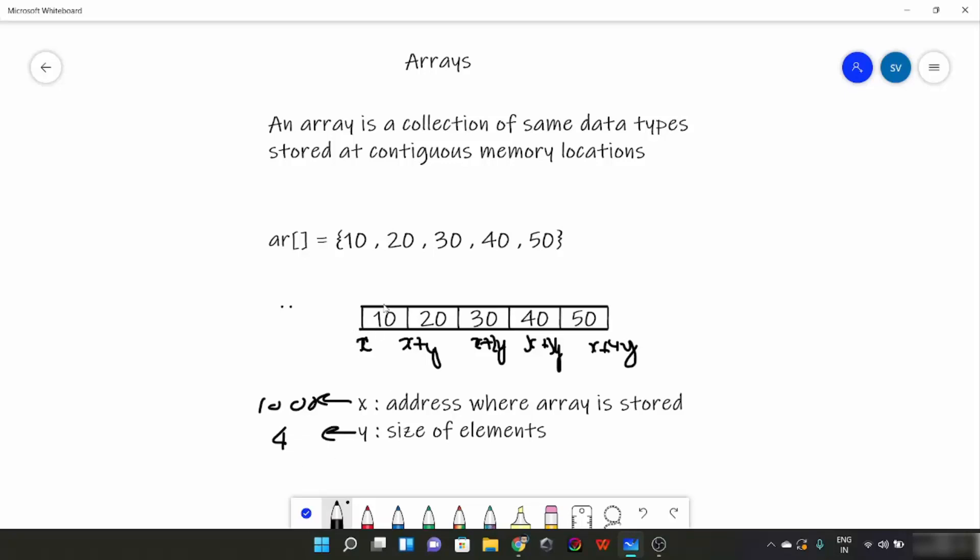So 10 would be stored at 1000, 20 would be stored at location 1004, similarly 1008. It is going to be 1012, and this is going to be 1016. So this is how the elements are stored.